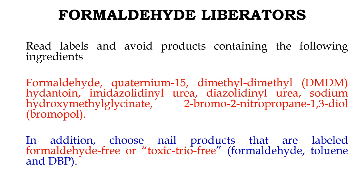The takeaway is that one should always read labels very carefully and avoid products containing these ingredients. Ingredients to look for on cosmetic labels include formaldehyde, Quaternium-15, DMDM hydantoin, imidazolidinyl urea, and substances like bronopol.